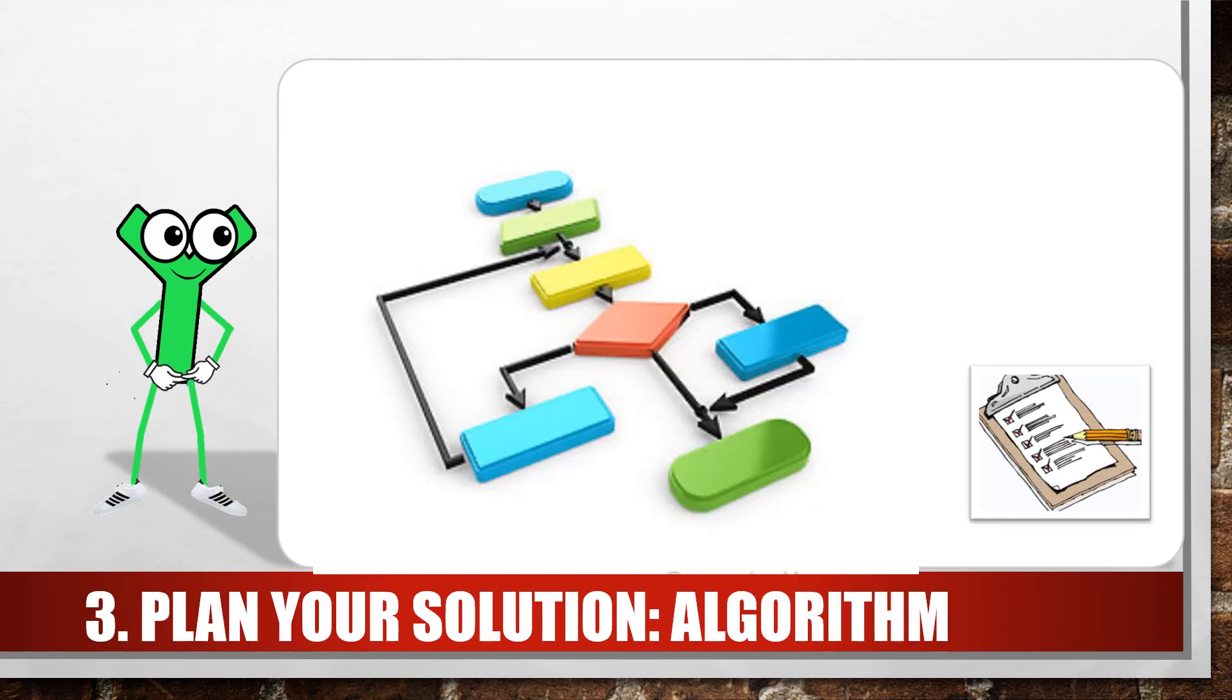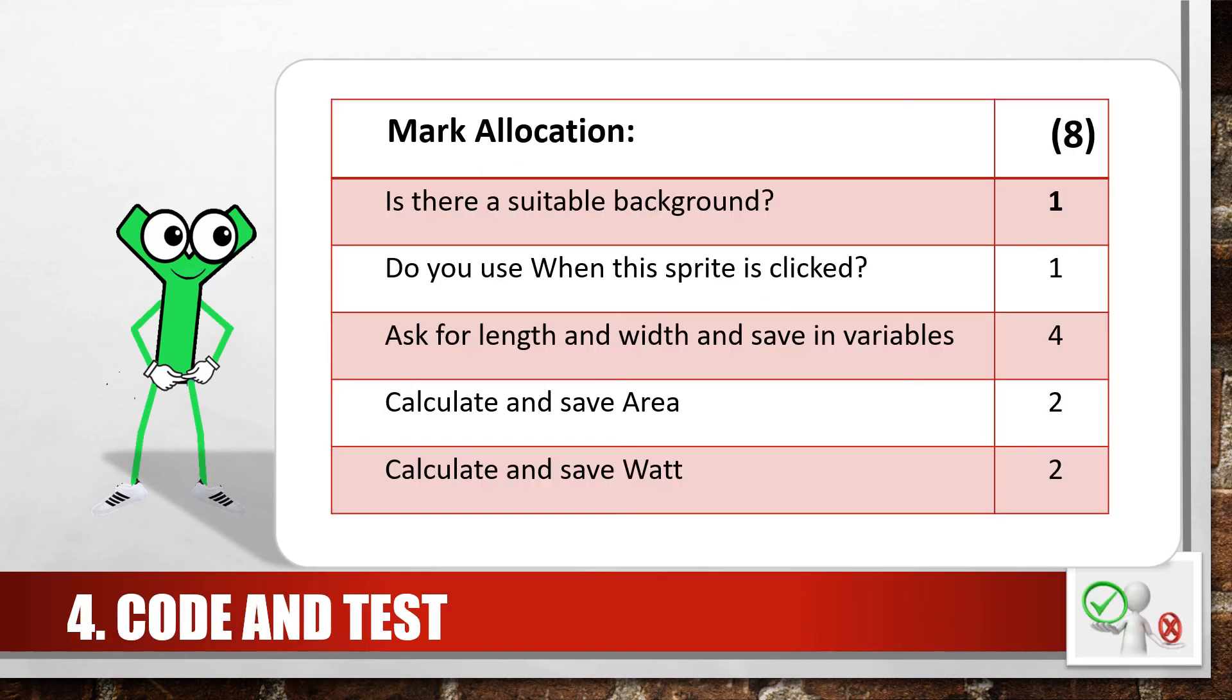Then write down the steps to code, including the input you need, formulas that you will use to calculate the answers and how you will display the output. Follow your own algorithm to write the program and test constantly to check if everything is working the way it's supposed to.